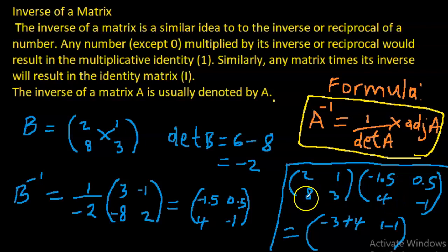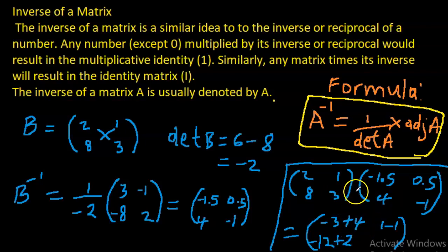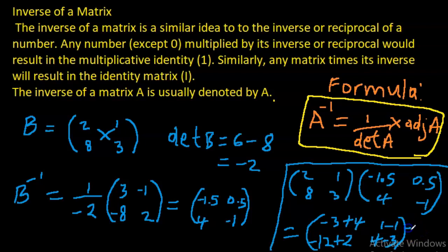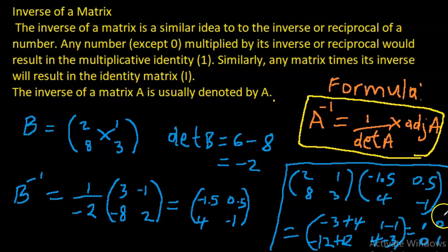For the bottom-left entry: 8 times minus 1.5 is negative 12, plus 3 times 4 is positive 12. For the bottom-right entry: 8 times 0.5 is 4, and 3 times minus 1 is minus 3. So negative 3 plus 4 is positive 1; 1 minus 1 is 0; negative 12 plus 12 is 0; and 4 minus 3 is 1. We end up with the identity matrix.